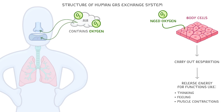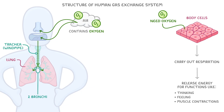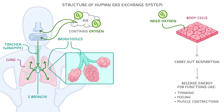Oxygen first enters through our nose or mouth and then travels down the trachea, which is also known as the windpipe. The air then moves into two bronchi, and each bronchus — which is what we call just one of these bronchi — leads to one of the two lungs. These bronchi then split into smaller tubes called bronchioles, which keep getting smaller and smaller until the air reaches tiny sacs at the end called alveoli.